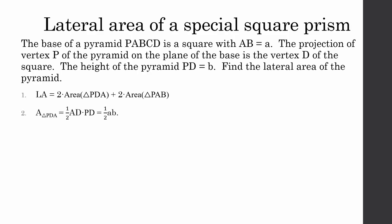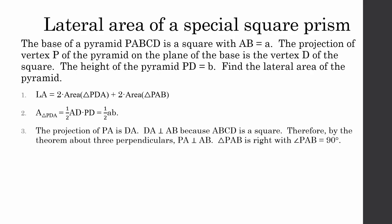The area of triangle PDA is found by multiplying base times height and dividing by two: one half AB. The projection of segment PA is DA. DA is perpendicular to AB because ABCD is a square. Therefore, PA is perpendicular to AB by the theorem about three perpendiculars. This means that triangle PAB is right with angle PAB equal to 90 degrees. Segment PA is equal to the square root of A squared plus B squared by the Pythagorean theorem, so the area of triangle PAB is equal to one half A times the square root of A squared plus B squared.